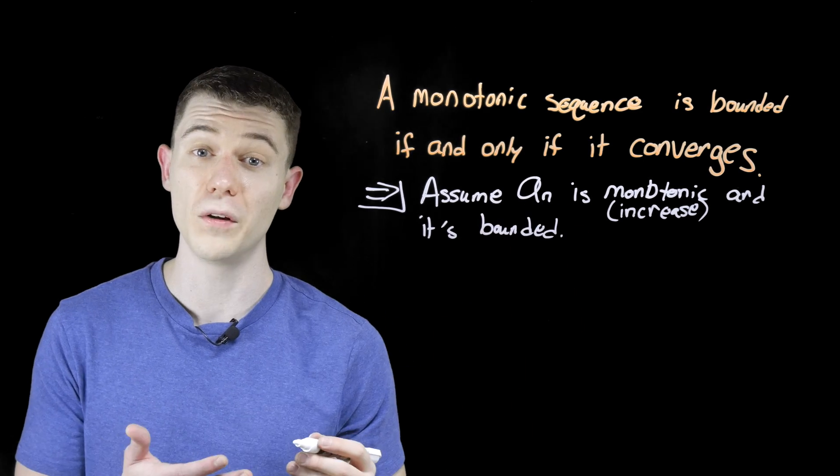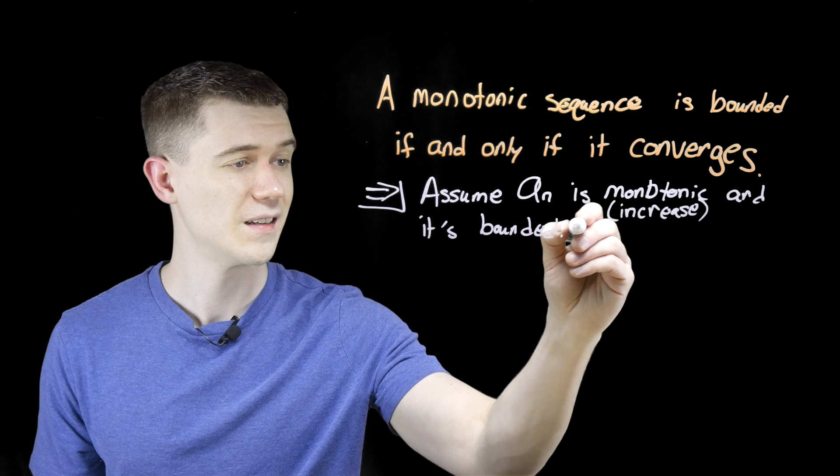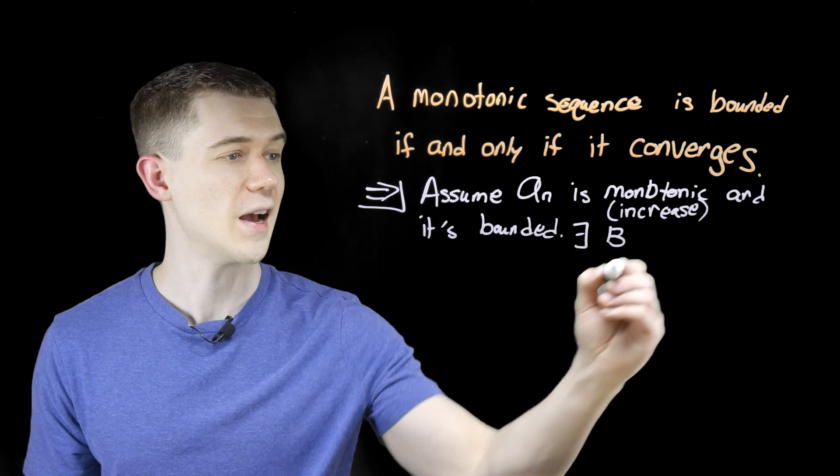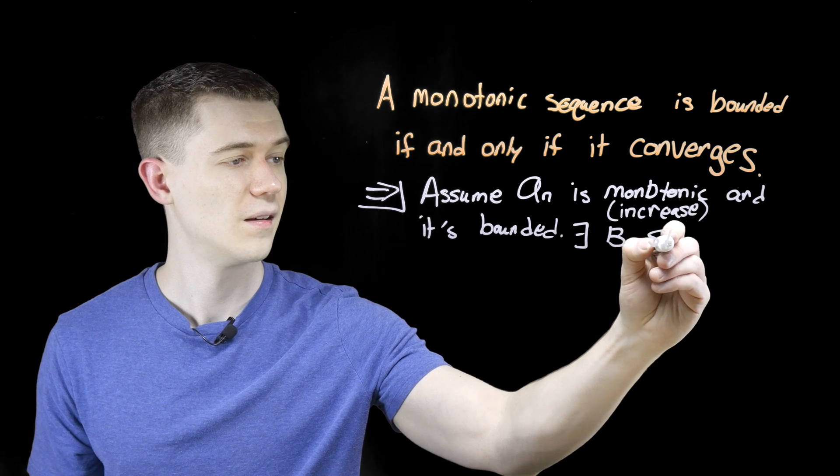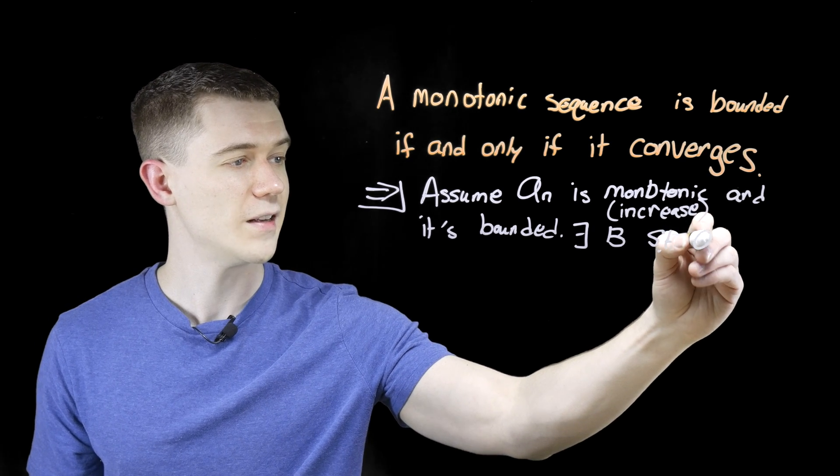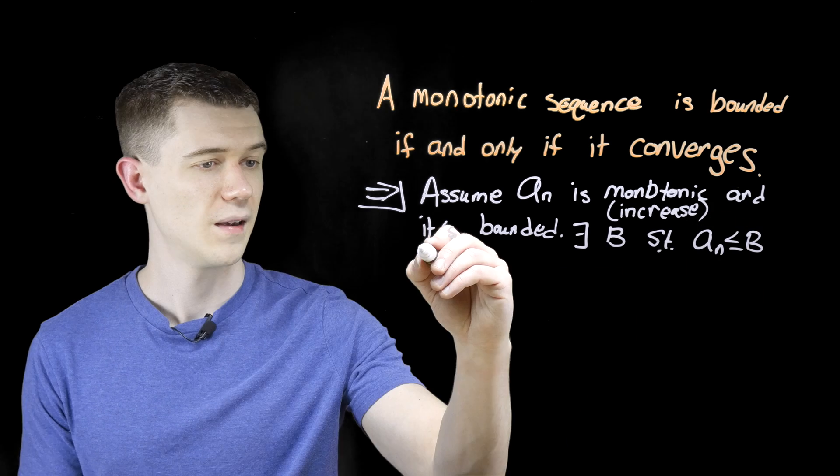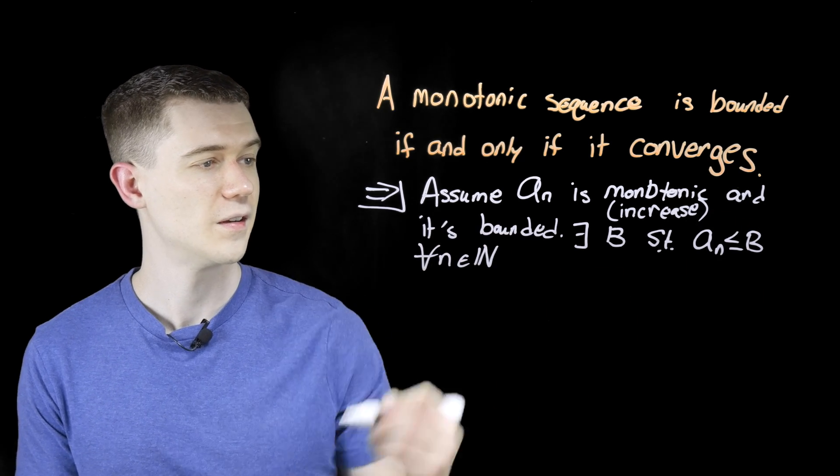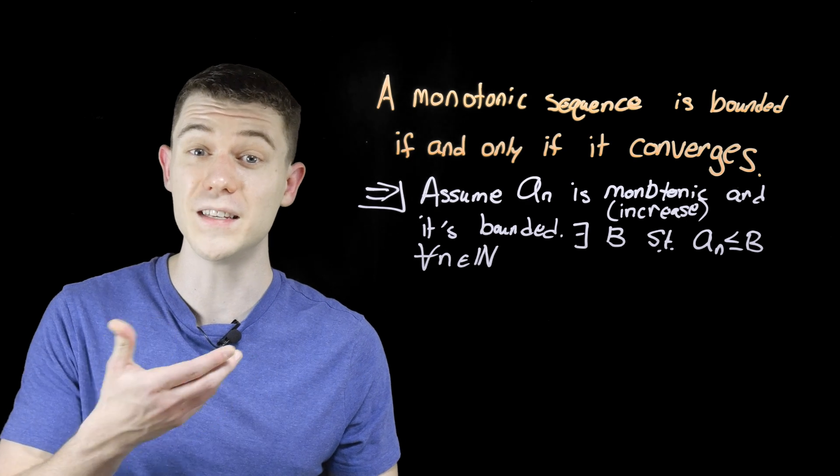Now what does bounded mean? Well that means there exists some capital B such that every element a sub n is less than or equal to B. And this would be true for all n in the natural numbers. So that's what it means to be bounded. This is our assumption.